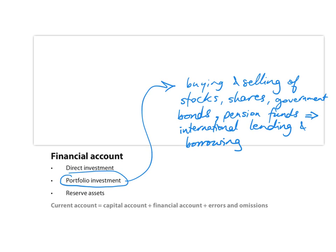The second sub-account of the financial account records portfolio investment. This refers to the buying and selling of stocks, shares, government bonds, pension funds, etc. So anything to do with international lending and borrowing is recorded in the portfolio investment sub-account of the financial account.